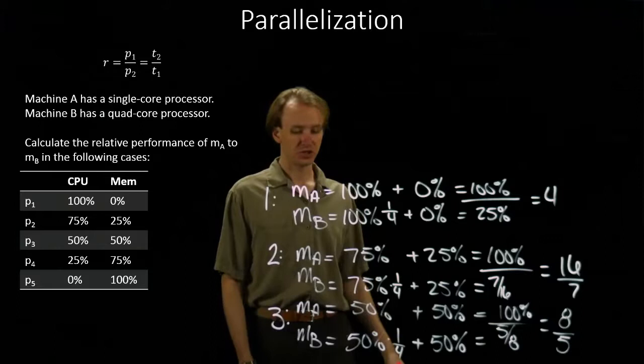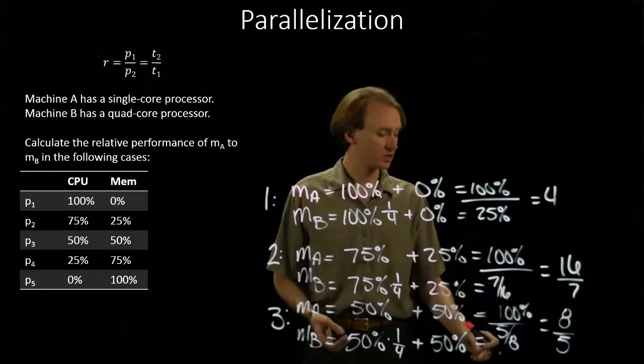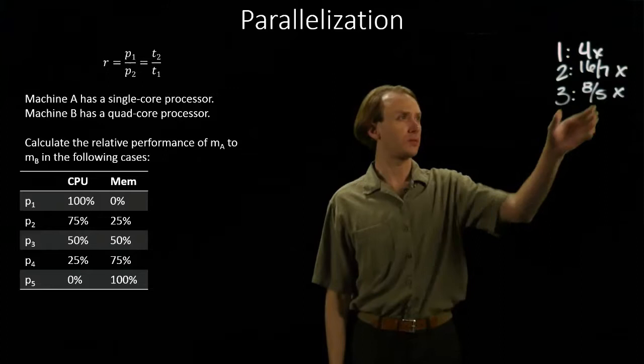Machine B is still faster than Machine A for this task, but it's by an increasingly smaller amount. We've gone from four times faster to a little over two times faster to 1.6 times faster. I've moved our results from parts one through three up here to make room for questions four and five.